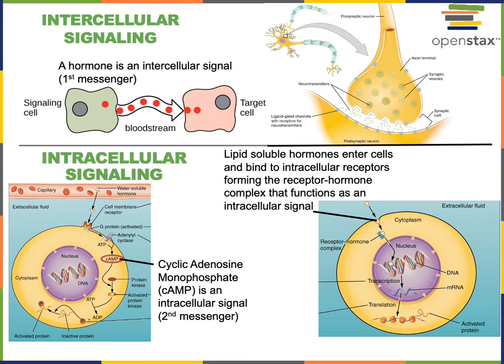Cell signaling can control the cell cycle and regulate cell division to control growth of tissues. Cell signaling can also alter membrane permeability, for example, opening or closing ion channels.